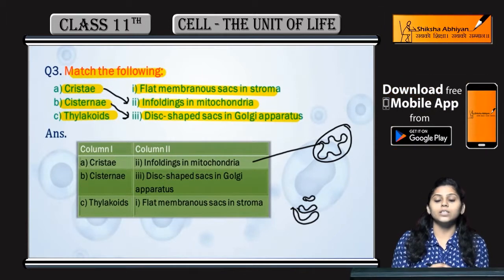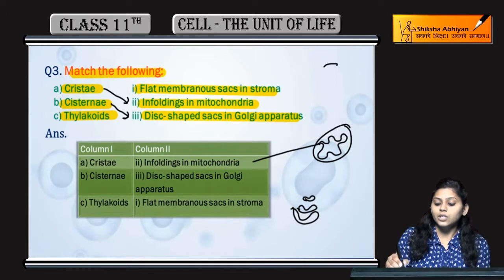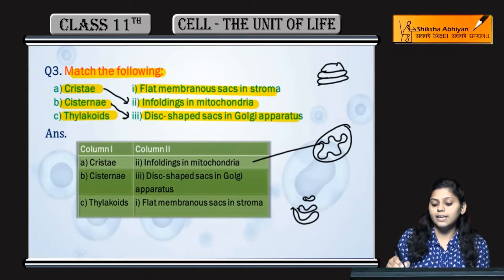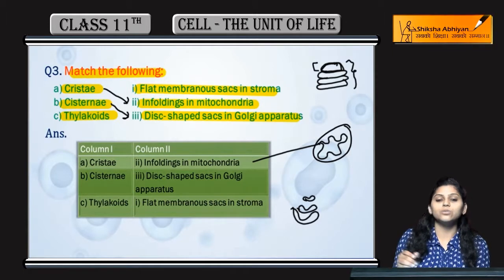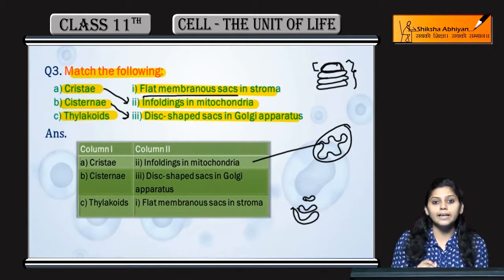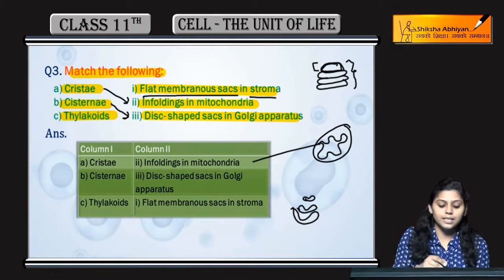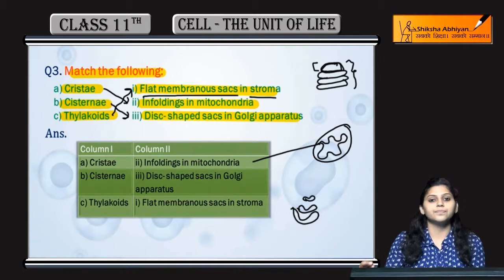Next is thylakoids. Chloroplast mein coin-like, sack-like structures hote hai, jo ek-dusre ke upar hote hai — inhye grana bhi bolte hai. Single ye joh hote hai, ye hote hai flat membranous sacs in the stroma of chloroplast — ye hote hai thylakoids.